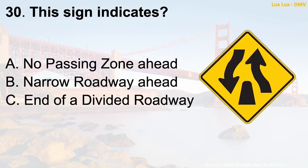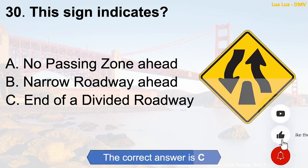Question 30: This sign indicates — A. No passing zone ahead. B. Narrow roadway ahead. C. End of a divided roadway. The correct answer is C: End of a divided roadway.